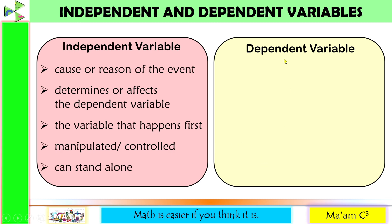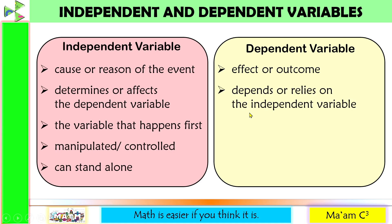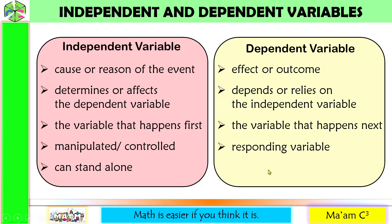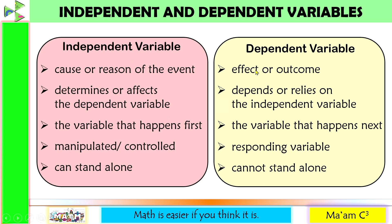On the other hand, the dependent variable is the effect or outcome. It depends or relies on the independent variable. It is the variable that happens next. If the independent variable is the manipulated or controlled variable, the dependent variable is the responding variable, and it cannot stand alone — it needs an independent variable to happen.